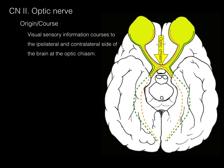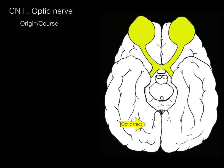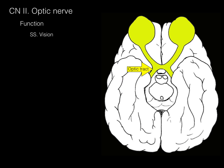Visual sensory information courses to the ipsilateral or contralateral side of the brain at the optic chiasm. The optic tract is the part of the visual pathways that courses from the chiasm to the occipital lobe.